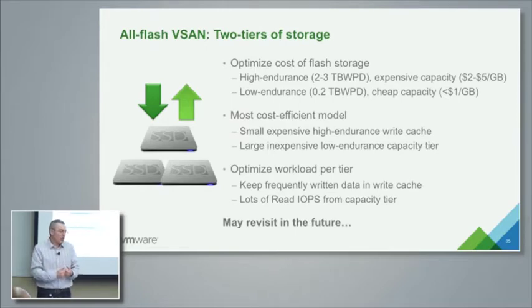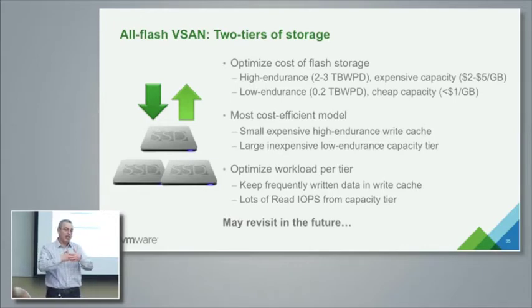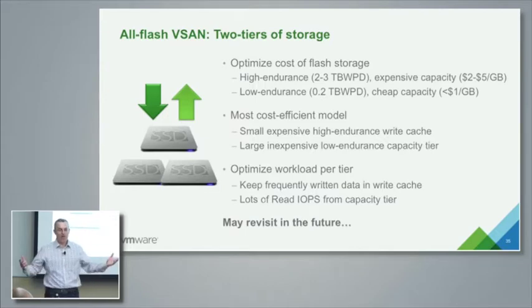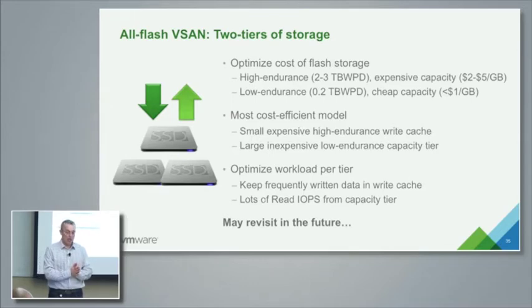The write cache takes all the writes. This is a very different caching model now. The write-back buffering targeting sequential workload for magnetic disks is not applicable here anymore. The capacity tier devices can take as many random IOPS as you have — really fast — but you don't want to write too much to them as they don't have much endurance. We are certifying drive-grade MLC drives.